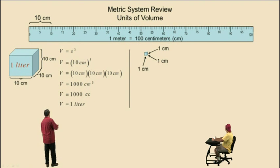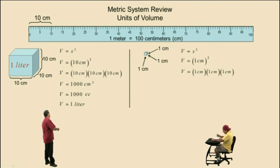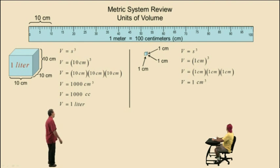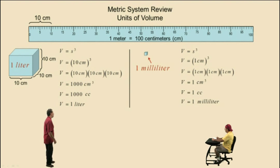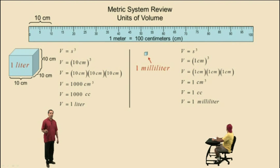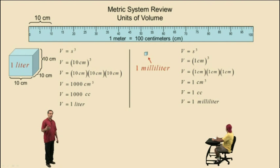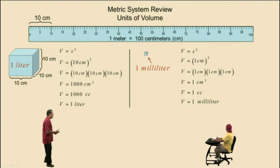Now let's look at a small cubic centimeter. Each side length is 1 centimeter, so the volume is 1 centimeter times 1 centimeter times 1 centimeter, which is 1 centimeter cubed — equal to 1 cc, which is equal to 1 milliliter. That means 1 cc is one-thousandth of a liter, because milli means one-thousandth. So 1 milliliter is one-thousandth of a liter, and 1 milliliter is equivalent to 1 cubic centimeter, or 1 cc.